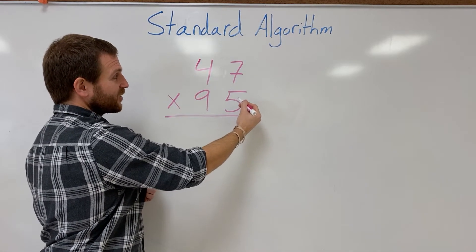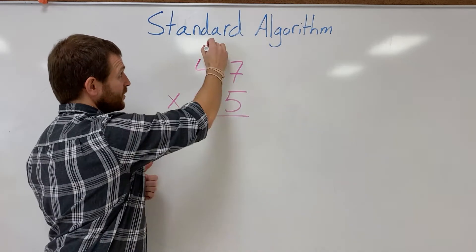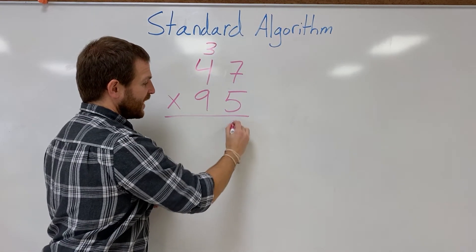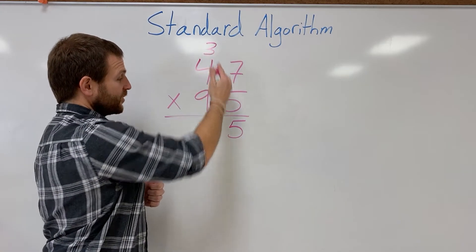So let's start by doing 5 times 7 is gonna give me 35. Carry the tens. Write the ones in my answer: 35.